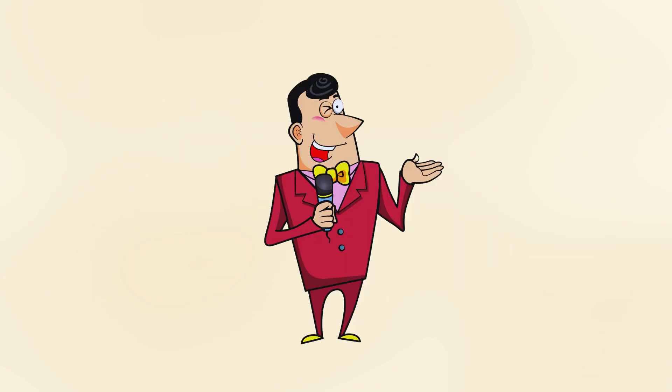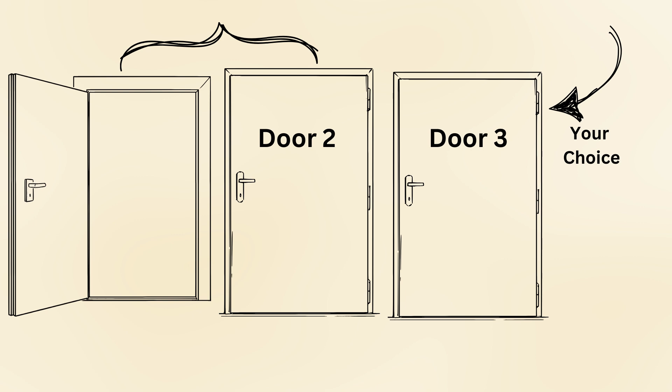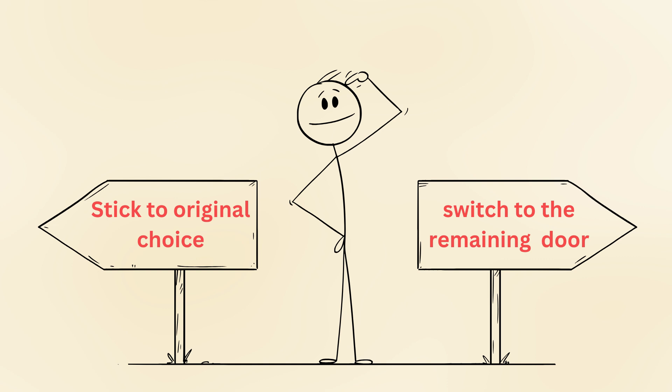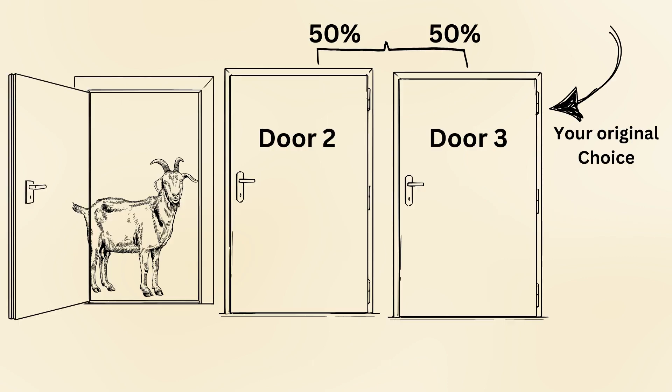Then, the host who knows what is behind every door opens one of the other two doors to reveal a goat. Now, you're given a choice. Stick with your original door or switch to the remaining unopened door. It might seem that there's a 50-50 chance now, but that is not the case.